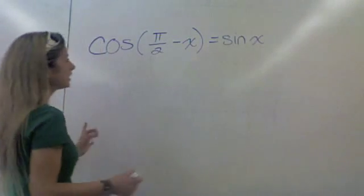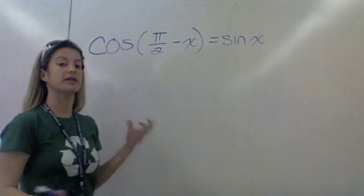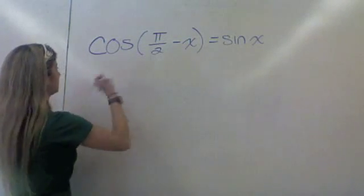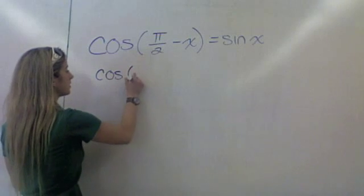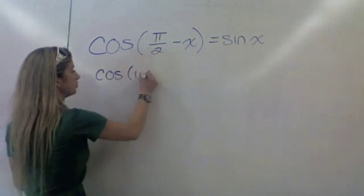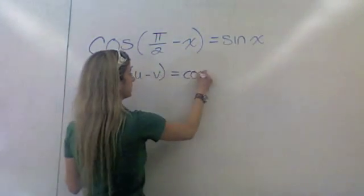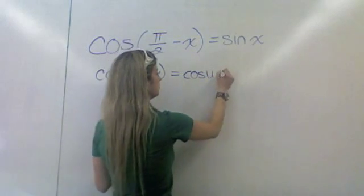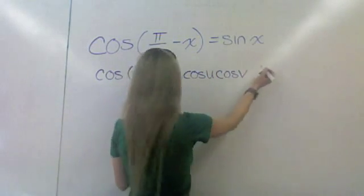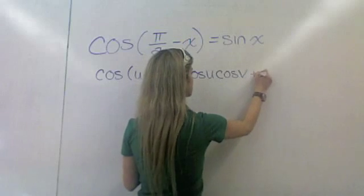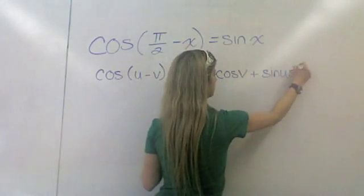We learned another identity — the cosine of a difference identity — which basically said that the cosine of u minus v equals the cosine of u times the cosine of v plus the sine of u times the sine of v.